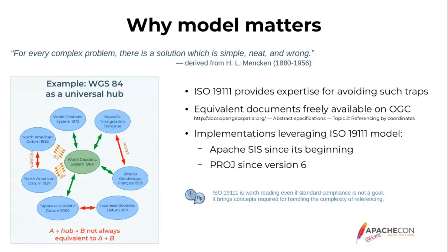These standards are free, at least the ones developed conjointly with OGC. Examples of implementations that use the ISO model are Apache SIS and PROJ. Apache SIS and GeoTools are the only projects, to my knowledge, which closely follow the ISO 19111 model. Many other projects may have the problem of using WGS84 as a universal hub. Even if someone does not care about standards, it is still useful to look at this specification in order to get the concepts for doing things as well as possible.